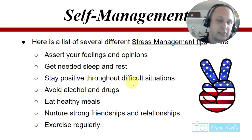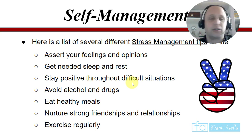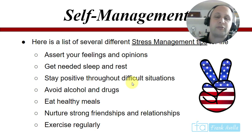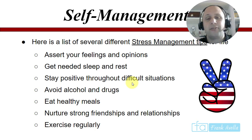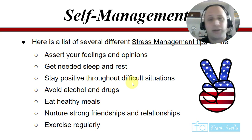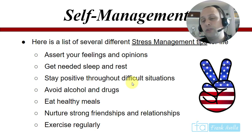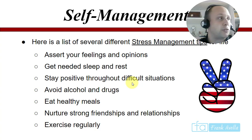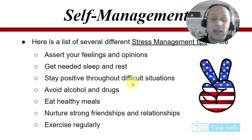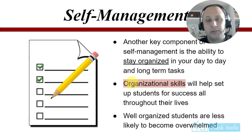Stay positive in difficult times. Avoid alcohol and drugs. Eat healthy meals. Nurture friendships and relationships — it's important to have a good friend. You can always tell a good friend because they're happy for you when you've done something good, whereas a fake friend isn't happy when you're doing well with your life. And exercise regularly.